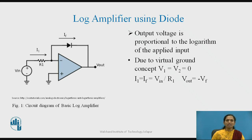Therefore, we can say the current flowing through resistor R1 is equal to the current flowing through the diode, that is If. Because the resistance at the input terminals of the op-amp is infinite or very large, I1 is equal to If. So we can write the equation for I1 with respect to the input voltage terminal, that is Vin divided by R1.